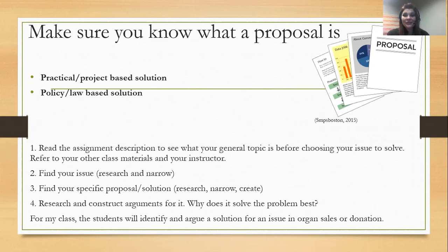The first place to start is to research your general topic — in my case, organ sales or donation — to find an issue in its specific context in the real world, something that's happening that you wish would be different, that you could solve somehow. Find something very specific in a context, perhaps in a business, an organization, or a governmental process or rule or law that you would like to change. Then research different solutions, find one you like, adjust it or create your own, and find arguments for why your solution is the best.